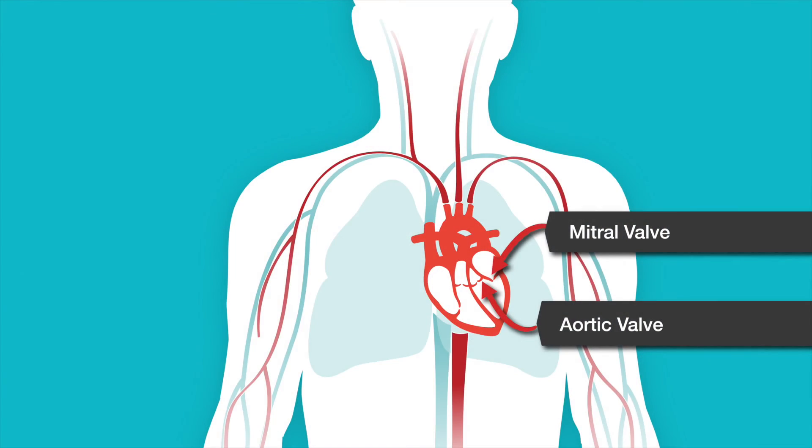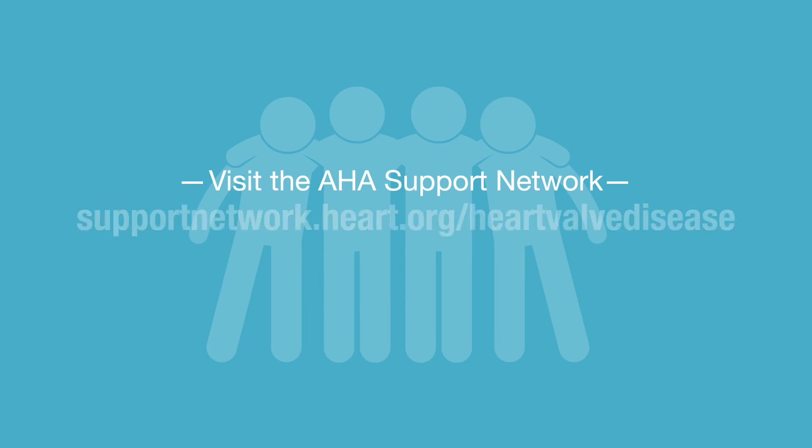Heart valve disease occurs primarily in two of the valves, and they're the valves on the left side of the heart — the mitral valve, which is between the left atrium and the left ventricle, and the aortic valve, which is between the left ventricle and the aorta, or the main artery out to the body. We do get disease in the right-sided valves, but not very often, and frequently it is only secondary to disease that occurs in the left-sided valves.